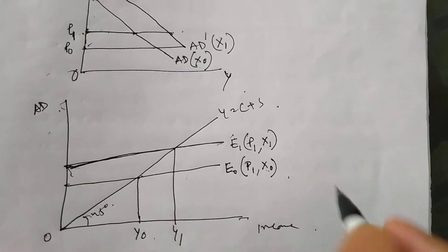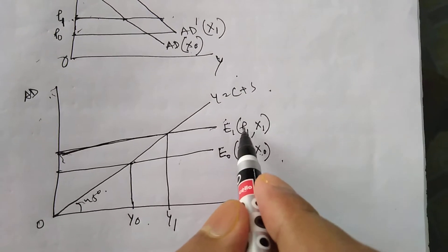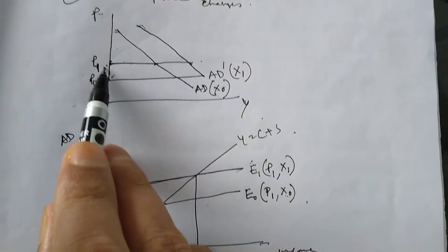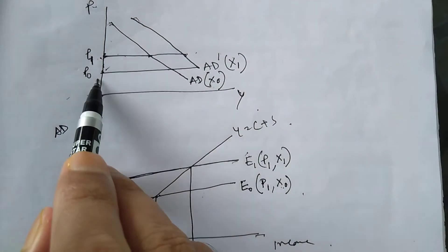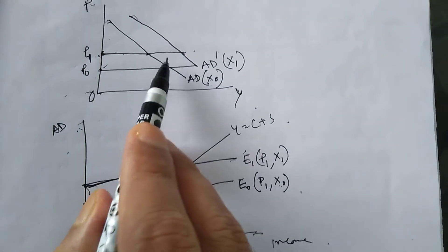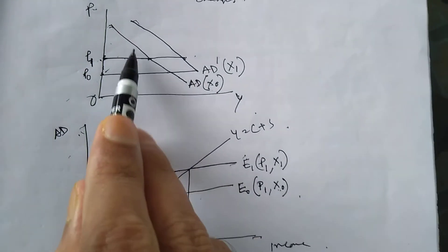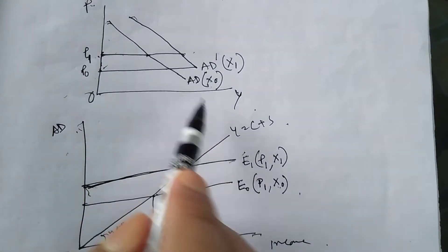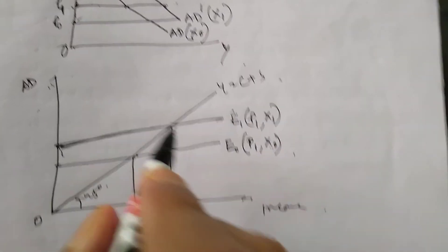Second: suppose now price has fallen — like here, when price falls from P1 to P0. That means we are moving along an aggregate demand curve; there is no shift. When price falls, that has three impacts.